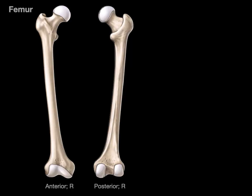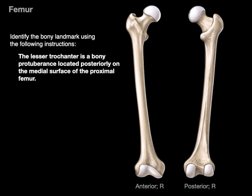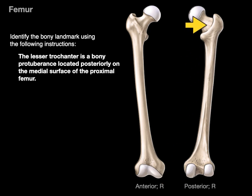Here's an anterior and posterior view of the femur on the right side of the body. I want you to identify the bony landmark using the following instructions: the lesser trochanter is a bony protuberance located posteriorly on the medial surface of the proximal femur. So let's go to the posterior view of the femur, and go proximally, closer to the origin. There is the medial protuberance — that is the lesser trochanter.